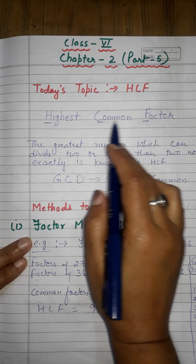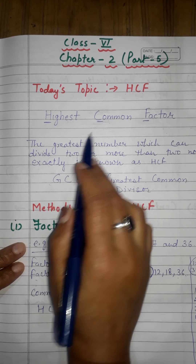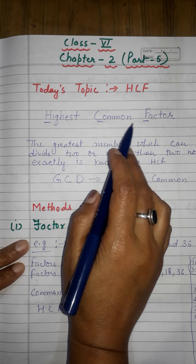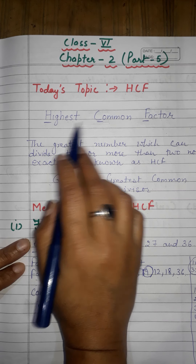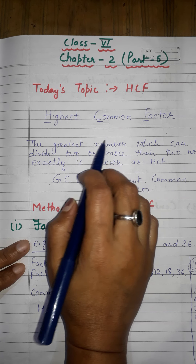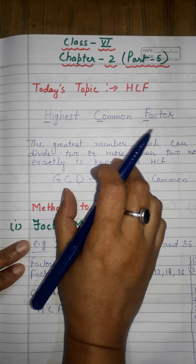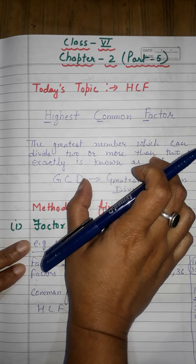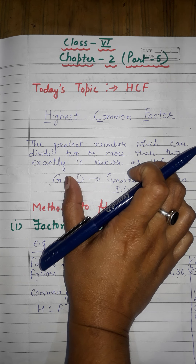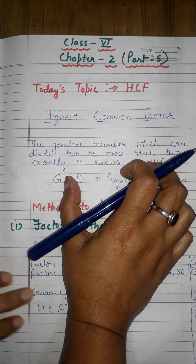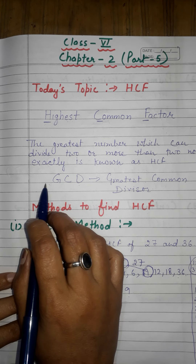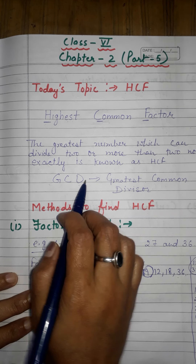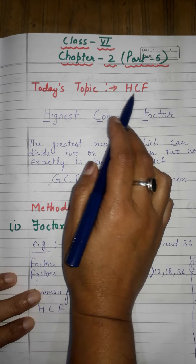The Highest Common Factor is the greatest number which can divide two or more numbers completely. That one number which can completely divide two or more numbers is called the Highest Common Factor. HCF is also known as GCD, which means Greatest Common Divisor.